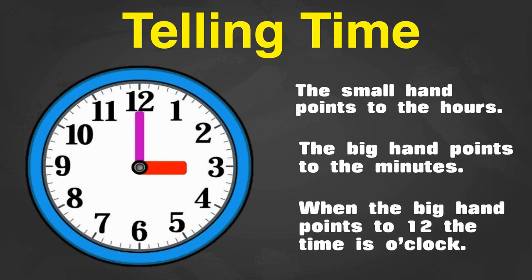When the big hand points to 12, the time is o'clock. Here, this clock says that the time is 3 o'clock.